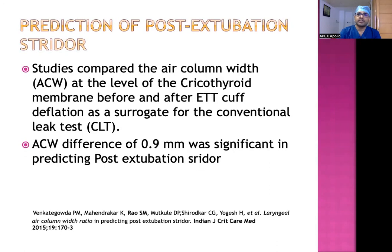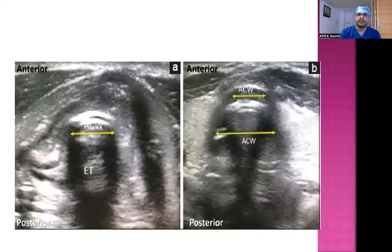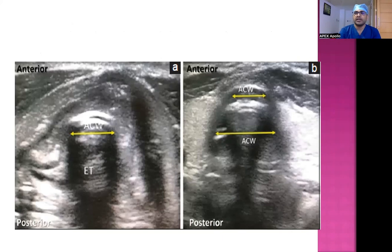The most important other usage is prediction of post-extubation stridor. Studies have compared airway column width at the level of the cricothyroid membrane before and after ET tube cuff deflation, as a surrogate for the conventional cuff leak test done at the bedside. An airway column width difference of 0.9 mm was significant in predicting post-extubation stridor. A study from Hyderabad by Venkata Gowda and Manimala Rao, published in IJCCM, demonstrated excellent prediction of post-extubation stridor by measuring the airway column width with the endotracheal tube cuff inflated and deflated.